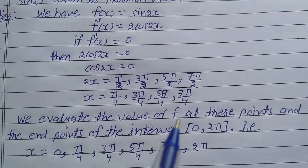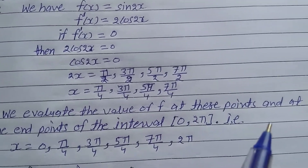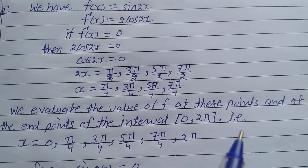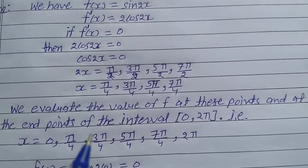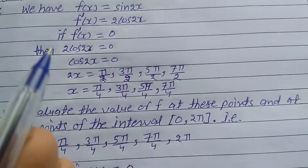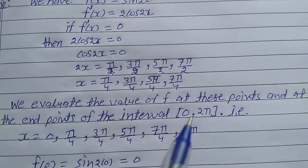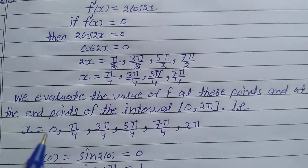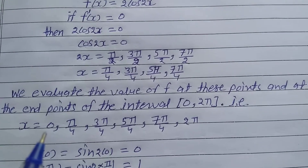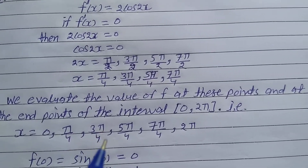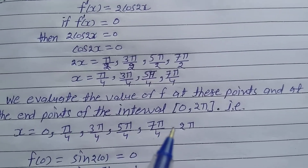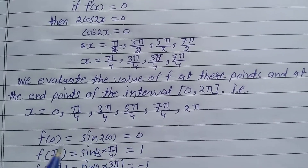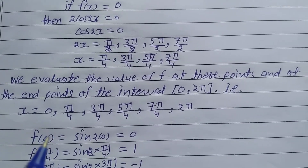We evaluate the value of f at these critical points and at the endpoints of the closed interval 0 to 2π. So the x values to check are: 0, π/4, 3π/4, 5π/4, 7π/4, and 2π. We need to find the value of f(x) at each of these values of x.